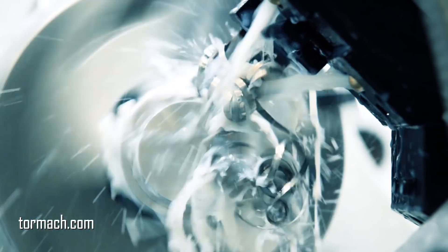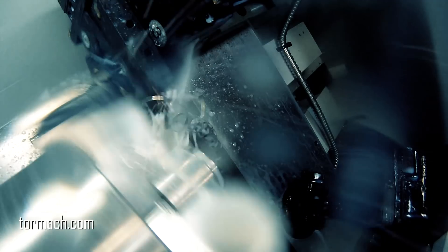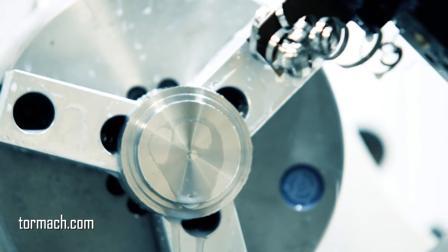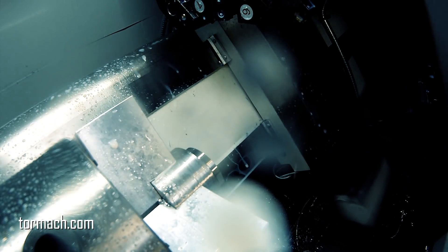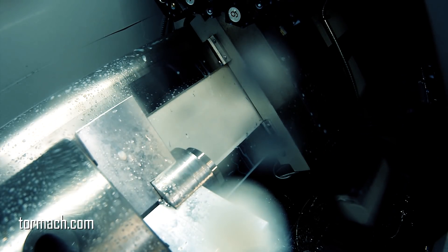Then we grabbed the parting tool, which is just a GTN-2, one-eighth inch wide grooving tool, and we just cut that thread relief. We ran this at the same, about 300 surface feet per minute, and this was I think 3 thousandths per revolution on this tool.